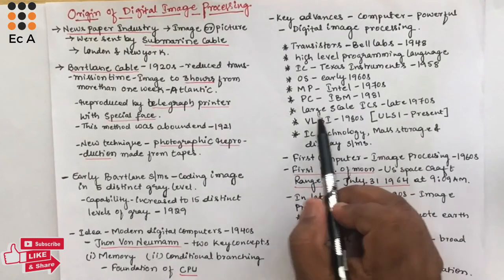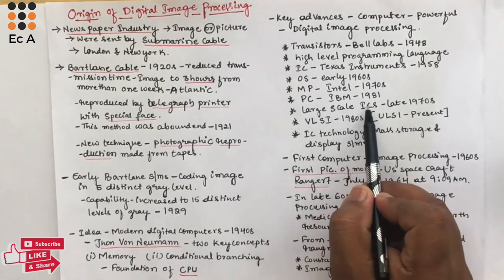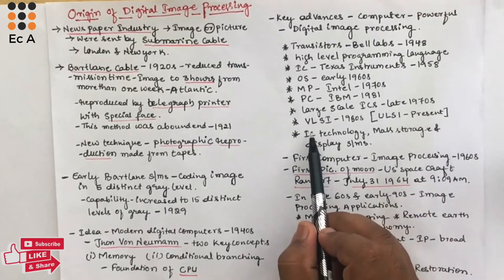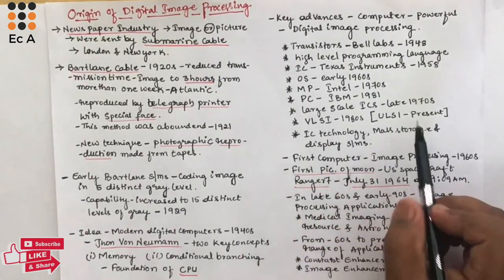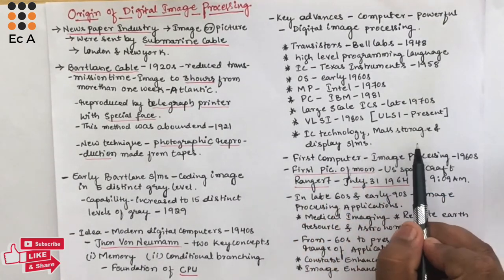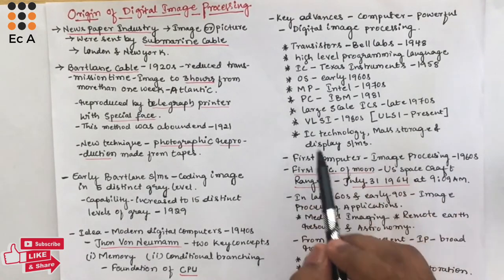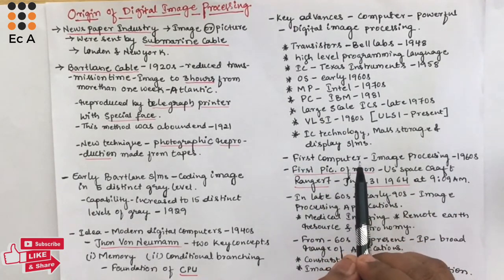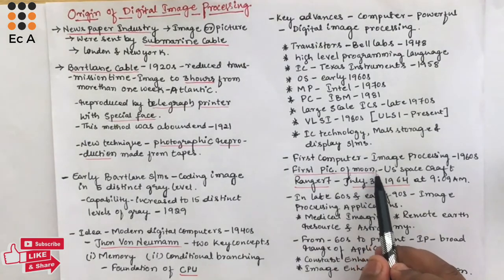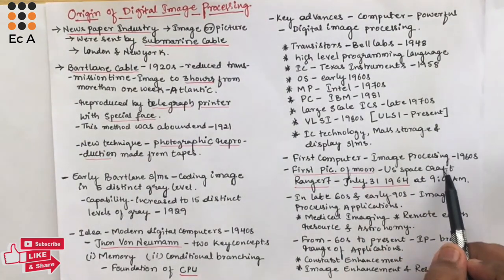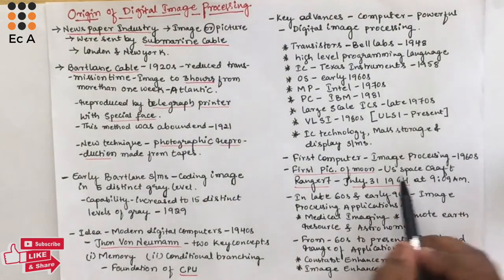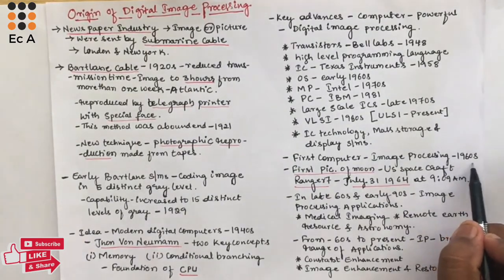Further advances include the development of operating systems in the 1960s, the development of the microprocessor by Intel in the 1970s, the introduction of personal computers by IBM in 1981, the large-scale production of ICs in the late 1970s, the introduction of VLSI in the 1980s, and nowadays we are using ULSI. Advancements in IC technology, mass storage, and display systems all made the computer more powerful so that it can process digital images. The first computer powerful enough to carry out meaningful image processing was introduced in the 1960s.